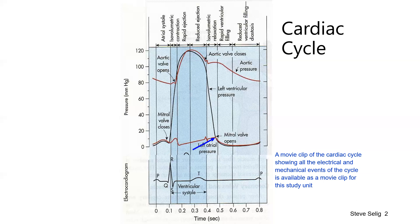As the mitral valve opens, ventricular pressure drops and there is a large inflow of blood from the left atrium — which has been filling with blood from the lungs — rapidly filling the left ventricle. This is the rapid ventricular filling phase, occurring in the early part of diastole. During the latter part of diastole, blood flows from the lungs through the open mitral valve into the left ventricle, while the aortic valve remains closed.